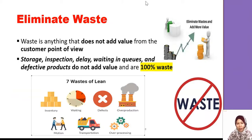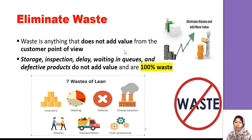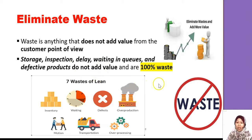Eliminate waste. Waste can be found around the manufacturing area — it can be visible or sometimes it's hidden somewhere. If you reduce the waste, automatically you will reduce the cost and productivity will increase. We need to identify which are the ones we consider as waste. Anything that is not value-added is considered waste: storage, inspection, delay, waiting in queue, and defects are all considered waste.